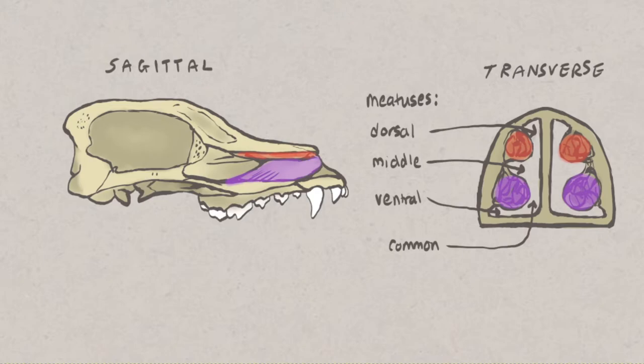The ventral meatus is the only one which travels through to the pharynx, and this is why when placing a nasoesophageal or nasogastric tube, the tube should be angled ventrally. The caudal ethmoidal conchi are rich in sensory nerve endings responsible for olfaction, the sense of smell.